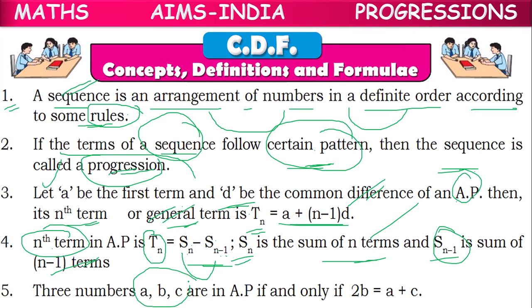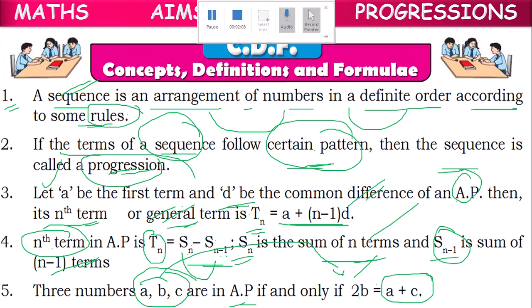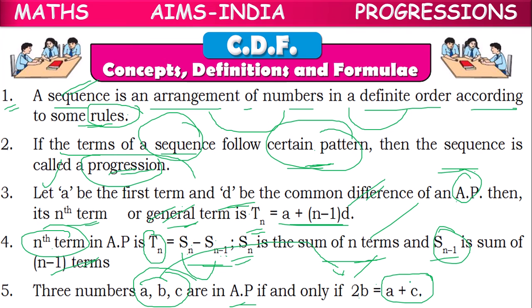Three numbers a, b, c will be in AP if and only if 2b = a + c — that is, twice the middle term equals the sum of the first and last terms. If this rule is satisfied, then and only then will they be in AP.